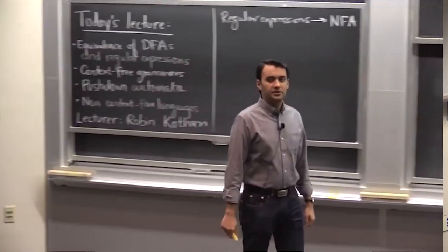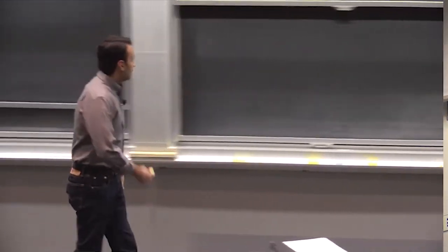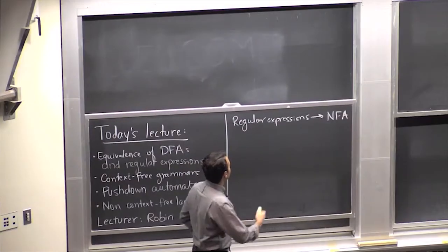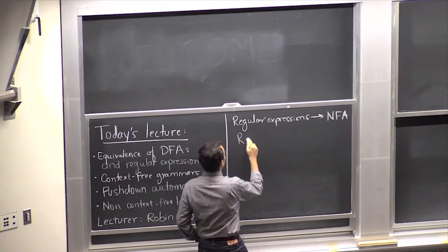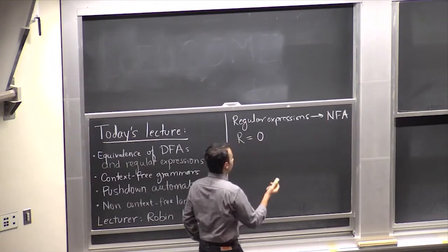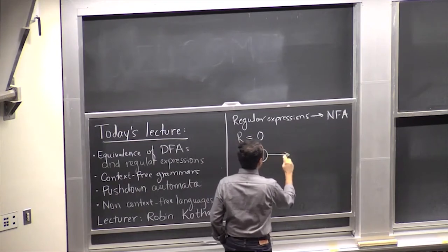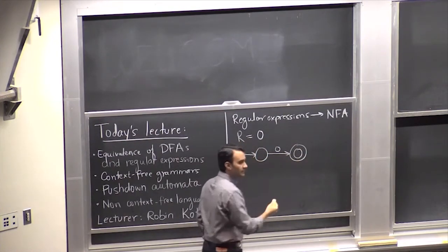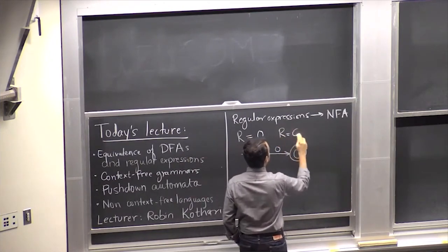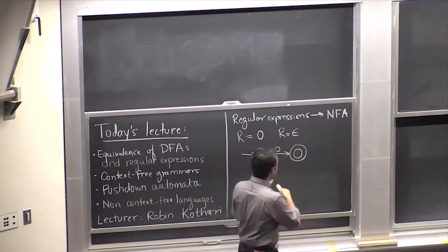We're going to show that given a regular expression, you can convert this to a non-deterministic finite state automata. There are really only three things you need to worry about when converting a regular expression to an NFA. You can have simple regular expressions like just a constant symbol, say zero. This is easy to make an NFA for — you just have your start state, which accepts zero and goes to the accepting state. If your regular expression is just a zero, just the empty string, or empty (it doesn't accept any strings whatsoever), that's easy to make as well.